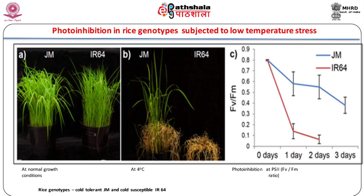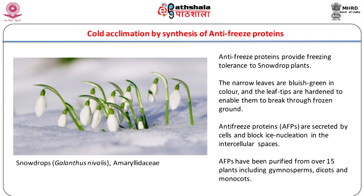Jumli Marshi (JM) and IR64 seedlings were grown for 3 weeks under regular growth conditions and then moved to 4 degrees centigrade cold conditions. After 3 days in cold conditions, plants were moved back to regular growth conditions and allowed to recover for 2 weeks. Figure A shows plants just before cold exposure, figure B shows cold-treated plants after recovery for 2 weeks, and figure C shows the chlorophyll Fv/Fm ratios in JM and IR64 during cold stress exposure.